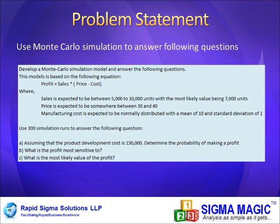We want to simulate a simple profit model where the inputs are not certain. There are three inputs: sales, price, and cost. Each of these inputs has an expected distribution.